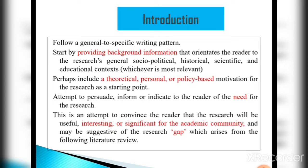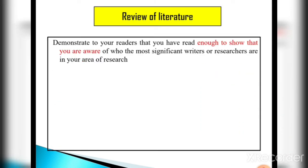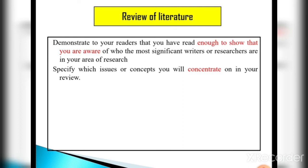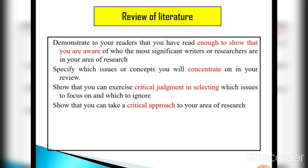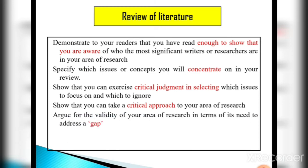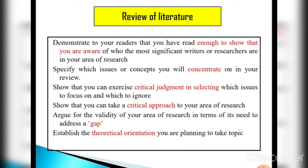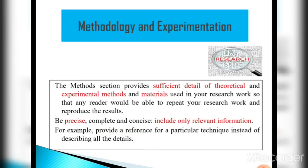Next is the review of literature. This means studying previously researched papers or theses to demonstrate to your readers that you have read enough to show awareness of the topic and significant research done. Specify which issues or concepts you will concentrate on in your research. Show how you can exercise critical judgment in selecting which issues to focus on and which to ignore. Show that you can take a critical approach to your area of research. Argue for the validity of your research area in terms of its need to address a gap, and establish the theoretical orientation you are planning to take on the topic.